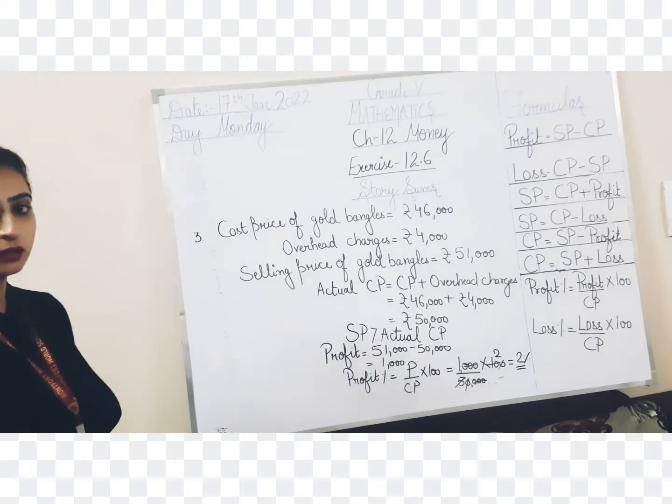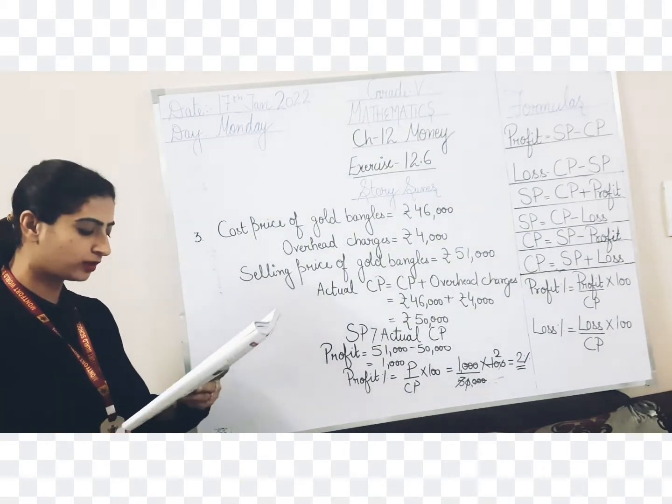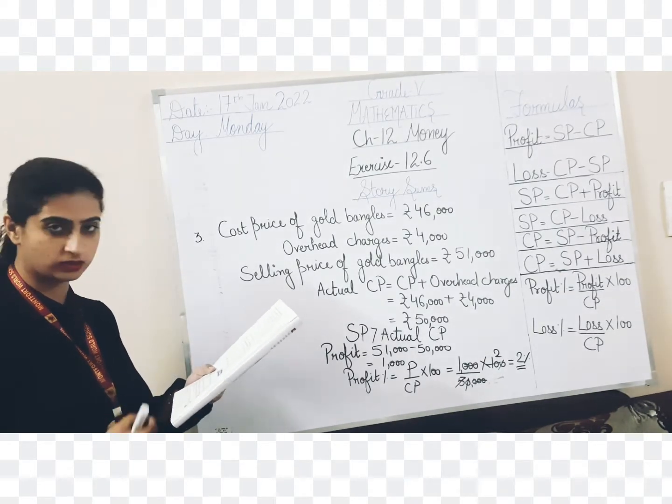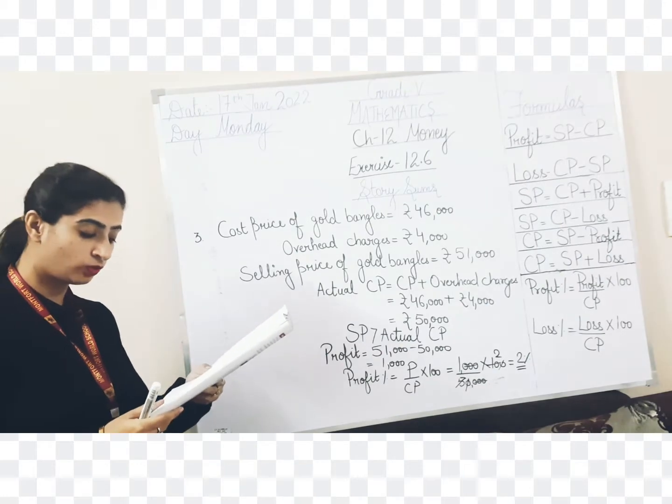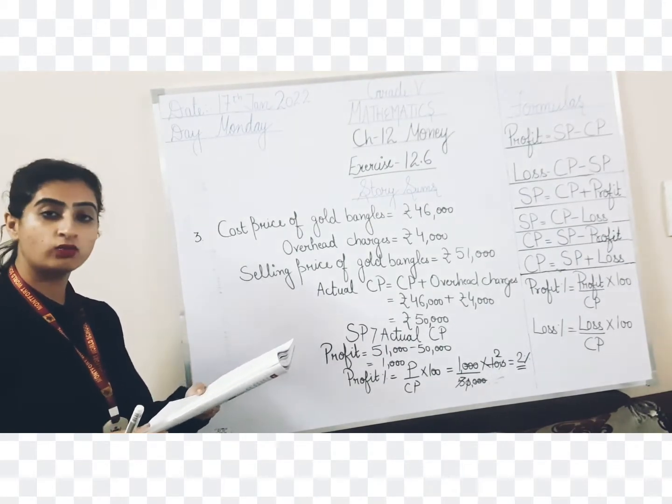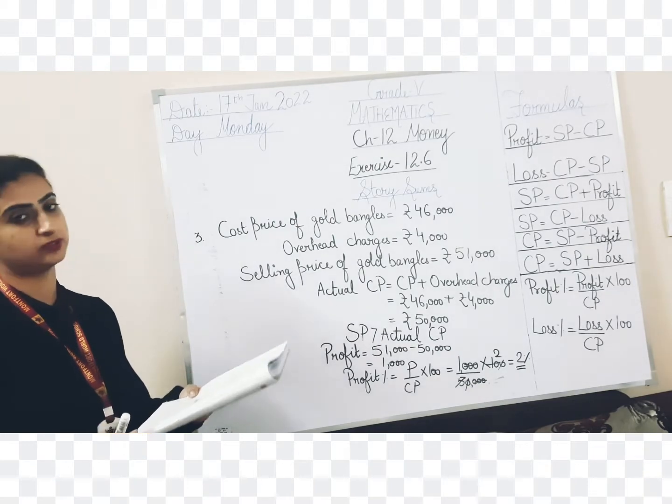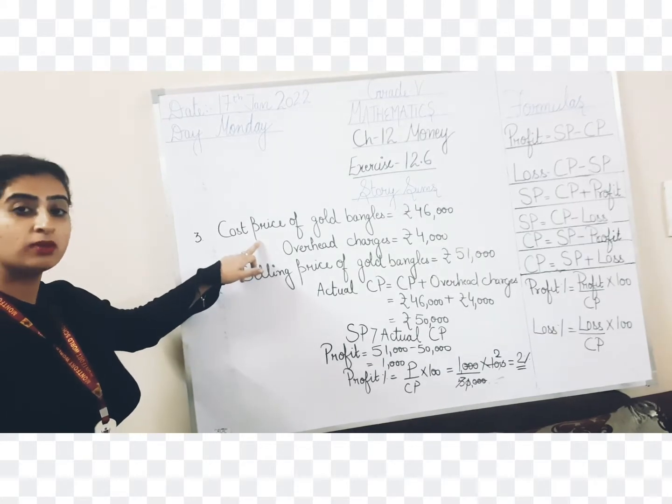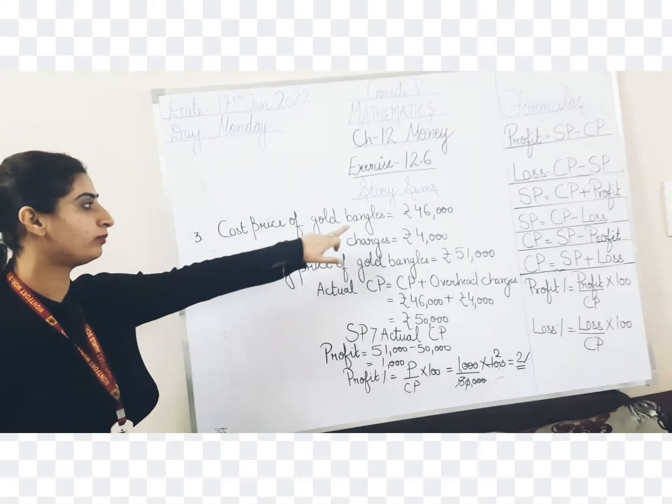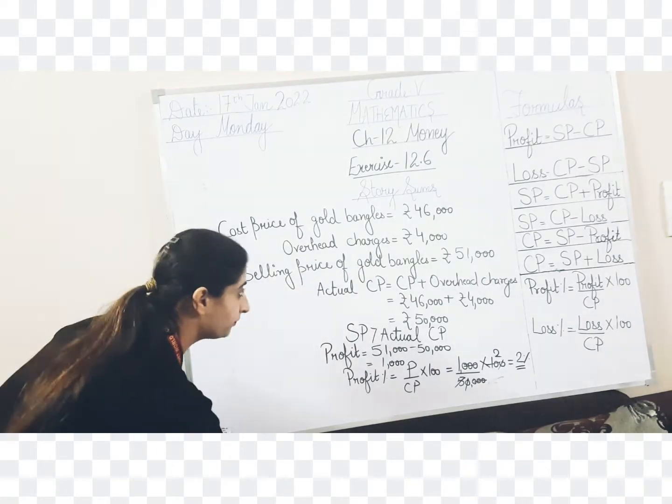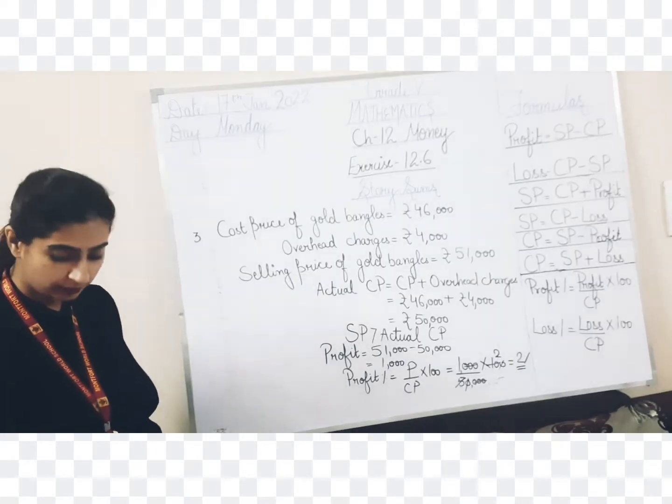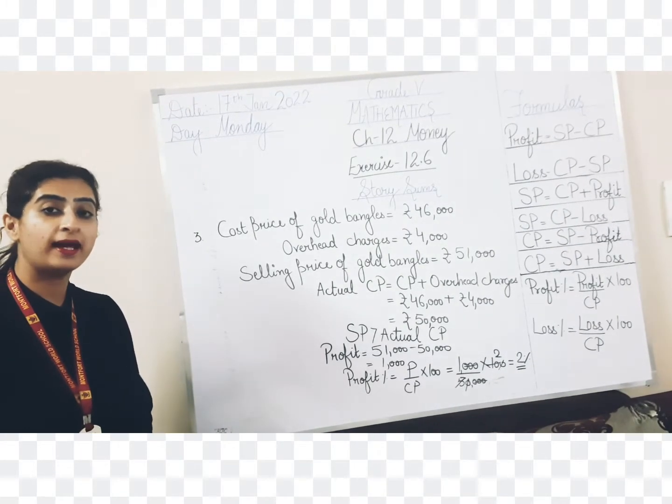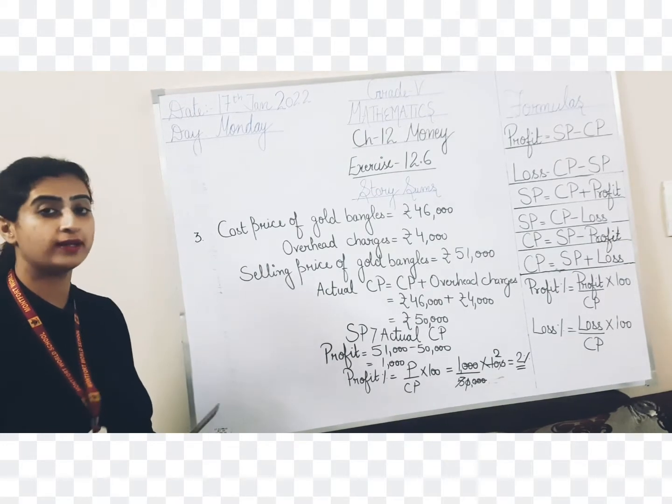Let us discuss third question now. Seema bought a pair of gold bangles for rupees 46,000 and paid rupees 4,000 as polishing charges. Later she sold the bangles for rupees 51,000. What was her profit or loss percent? Very interesting question. See what is given? Seema bought that means cost price. So cost price of gold bangles is rupees 46,000.